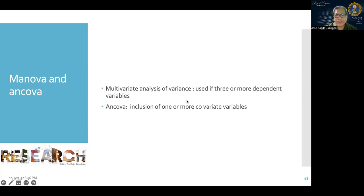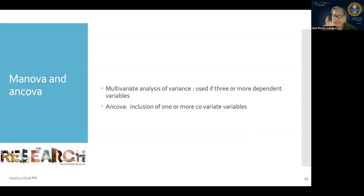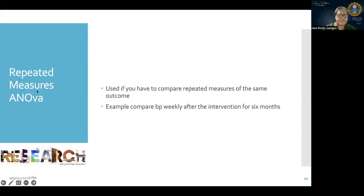MANOVA is multivariate analysis of variance used when you have three or more independent variables and are looking at variance. ANCOVA involves the inclusion of one or more covariate variables. Repeated measures ANOVA is used when looking at the same outcome at multiple time points for the same subjects — for example, comparing blood pressure weekly after an intervention.